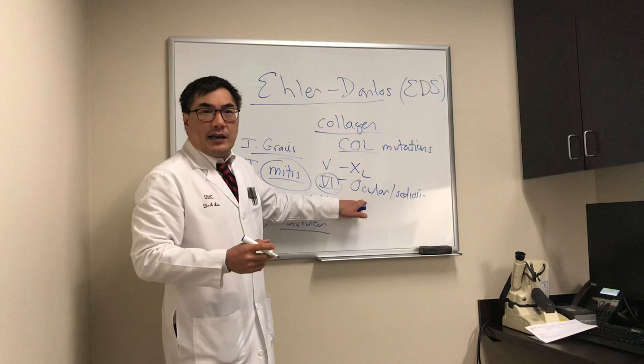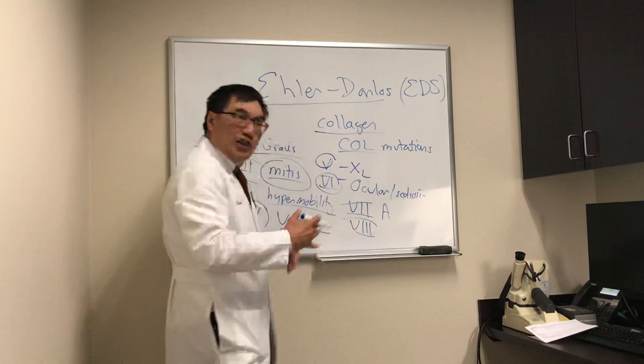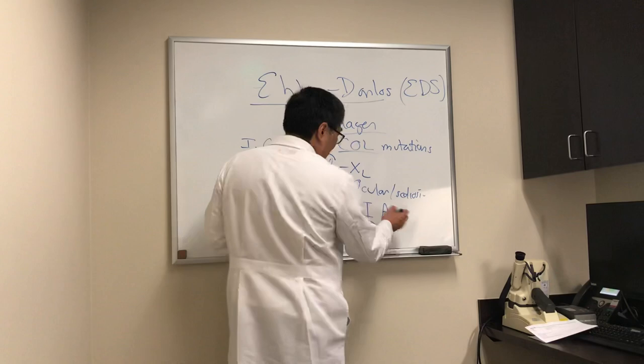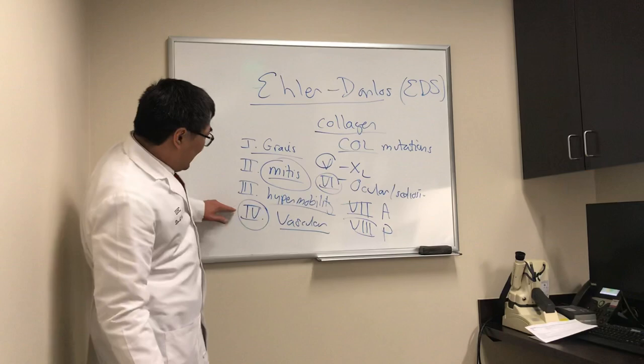The two types that don't typically come to us are the arthrocalasis form — the joint form with congenital dislocations — and the periodontal form. So the forms we see are the ocular form with thin eye structures, and the vascular form, which is the dangerous one.